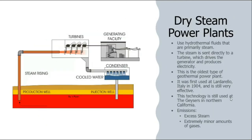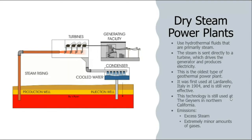There are three different types of geothermal power plants — three different ways we can convert this heat into electricity. The first is the most primitive kind of geothermal power plant.